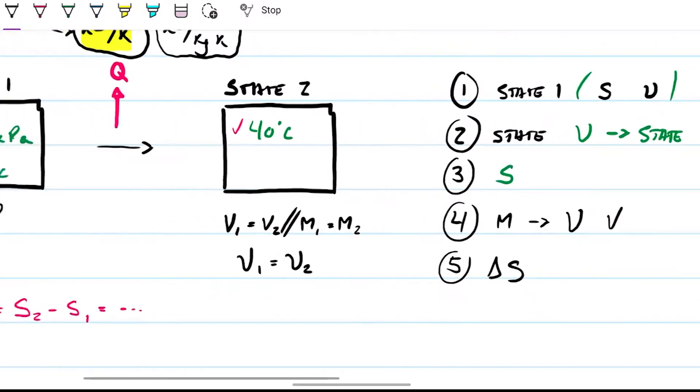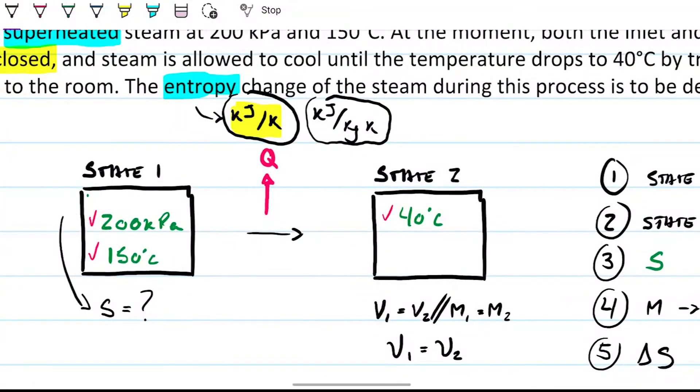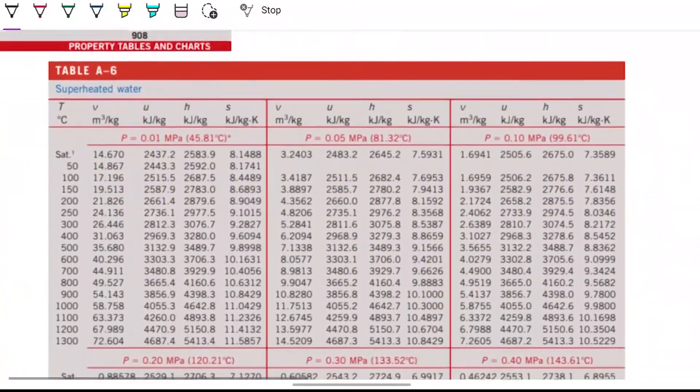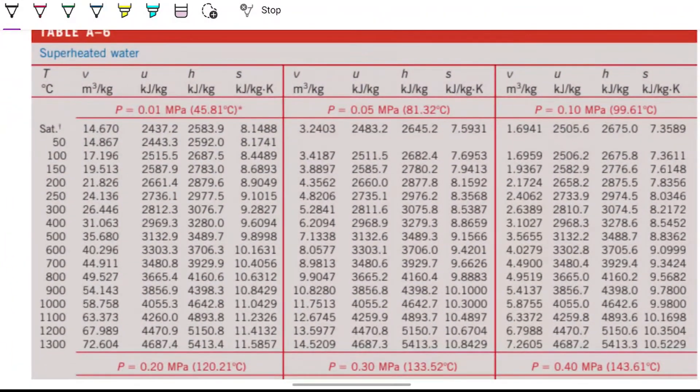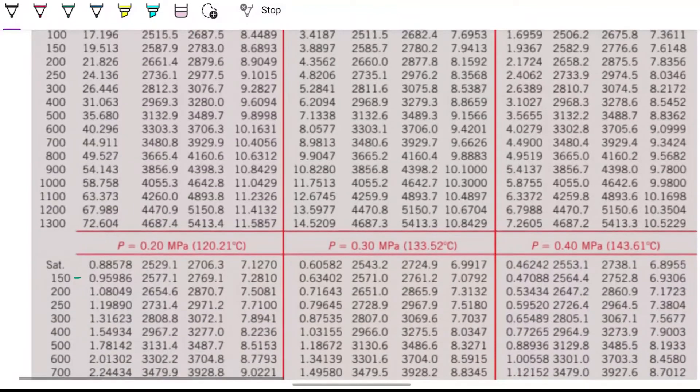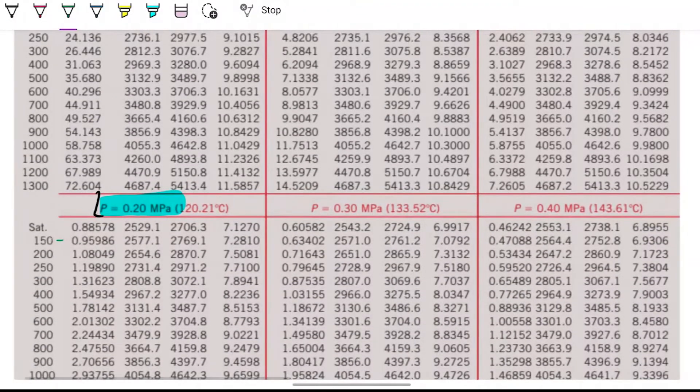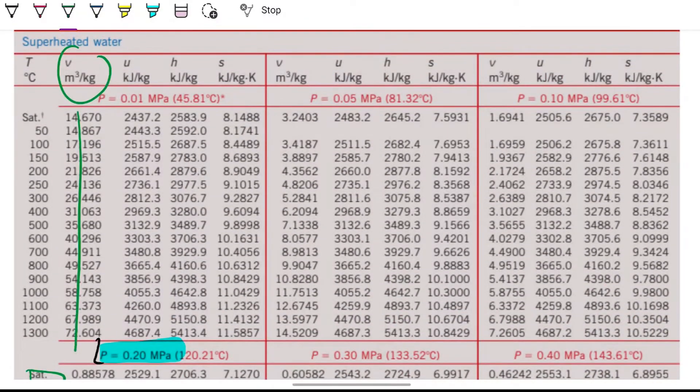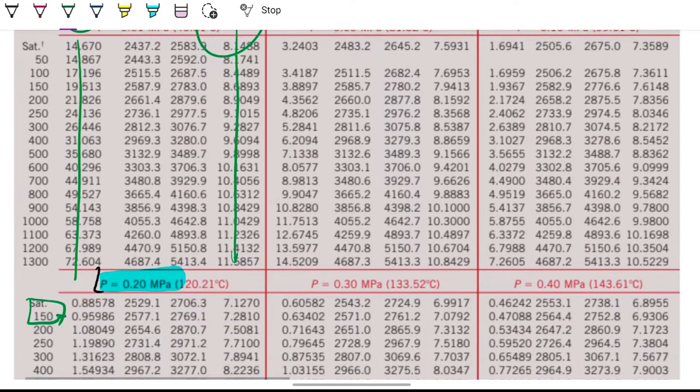State one is superheated, so I'm going to go down into superheated 200 kilopascals and 150 degrees Celsius. Saturated table, saturated pressure, superheated. I want the 150 Celsius and 200. So 200 is over here, 200 kilopascals, 150 Celsius. So I'm interested in specific volume and entropy. I'm interested in the 7.127... oops, sorry, on the 7.281 and on the 0.95986.